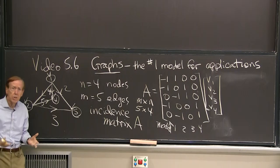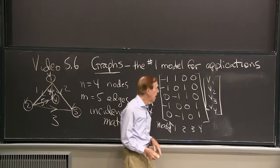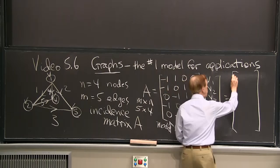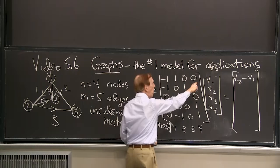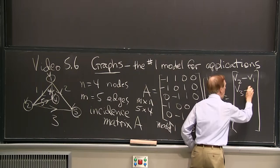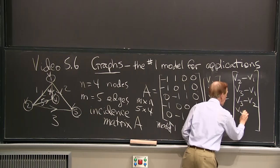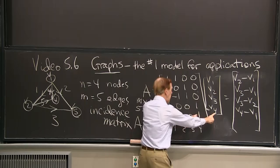OK. So first of all, when I multiply a times V, what do I get? Let me just do that multiplication. So that first row times that gives me V2 minus V1, right? The dot product of the row with the vector. The next one is V3 minus V1. Then I have a minus 1 there. That's a V3 minus a V2. Then I have a minus 1 and a 1. I think that's V4 minus V1. And finally, this dot product with that will give me a V4 minus V2.